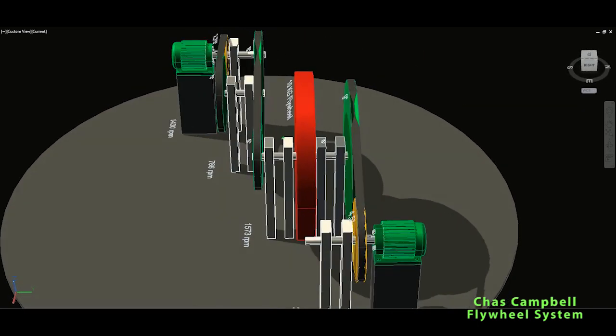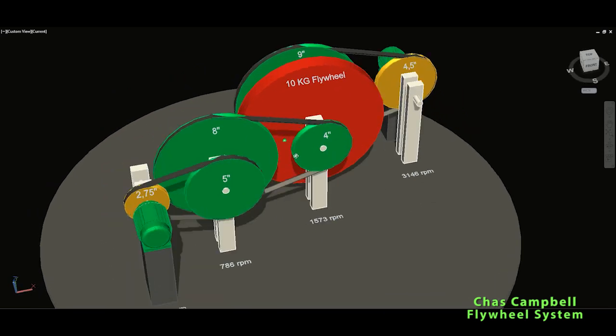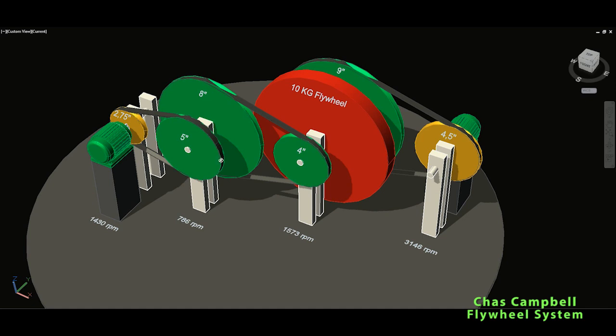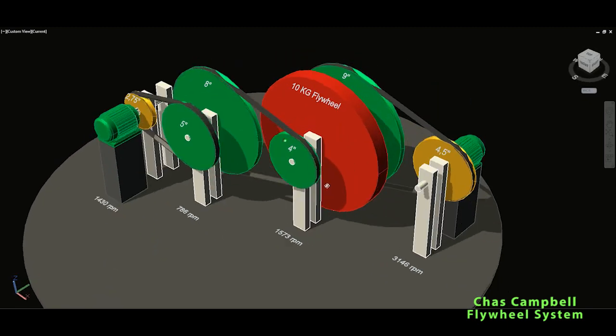So basically this is the Chas Campbell flywheel system which gives three times more output energy than the input energy. It can be self-sustained. When you reach the speed and you get 2400 watts on the motor, you should be able to disconnect your motor from the supply and supply it from the generator, plus you have excess energy out of the system. So this is basically it.